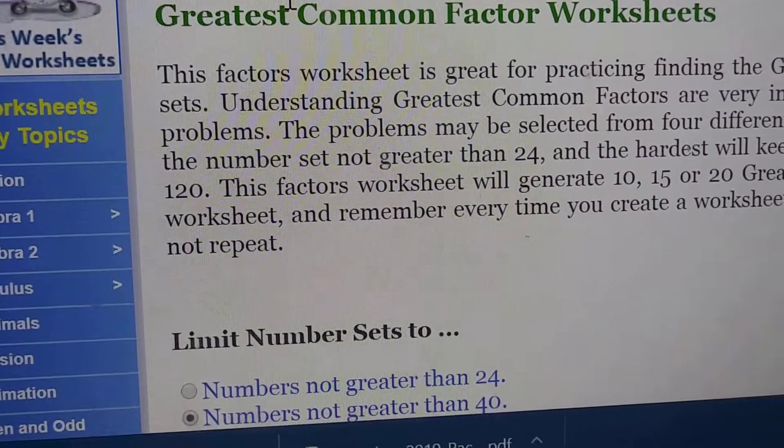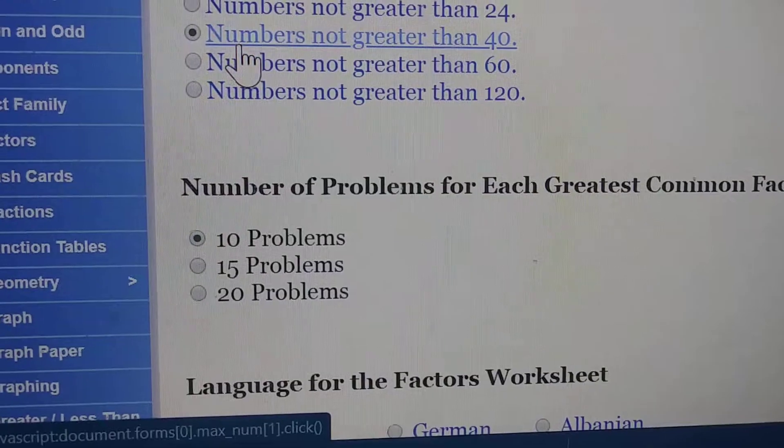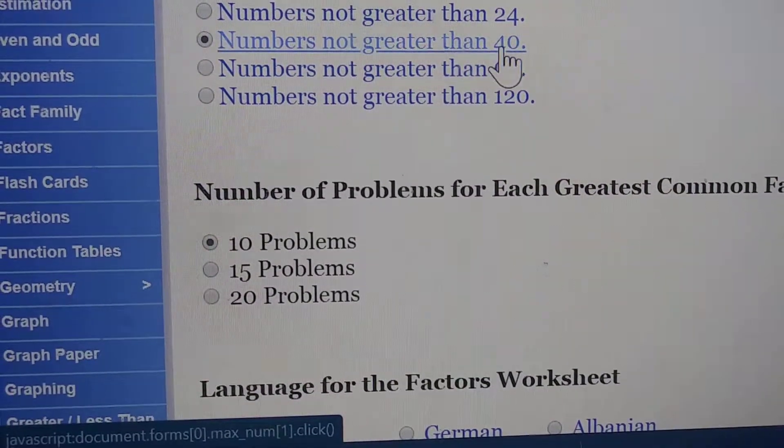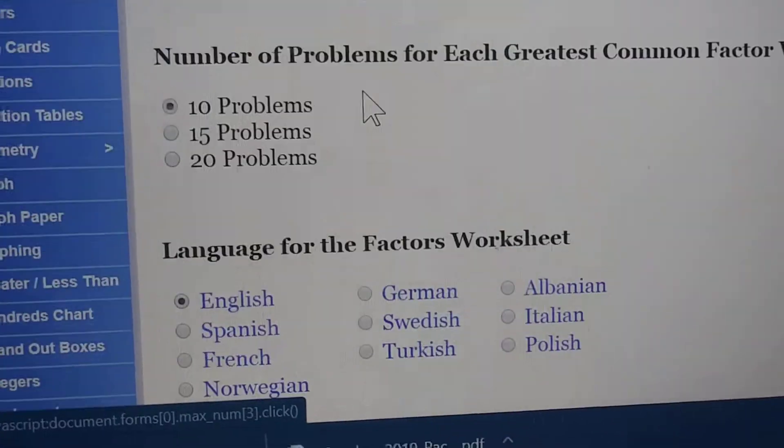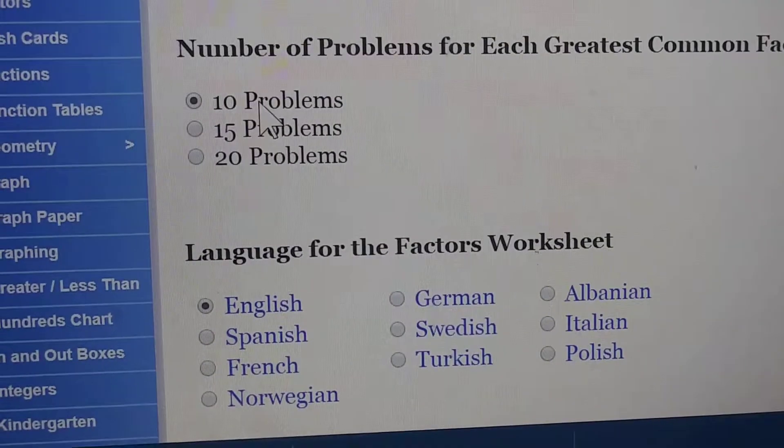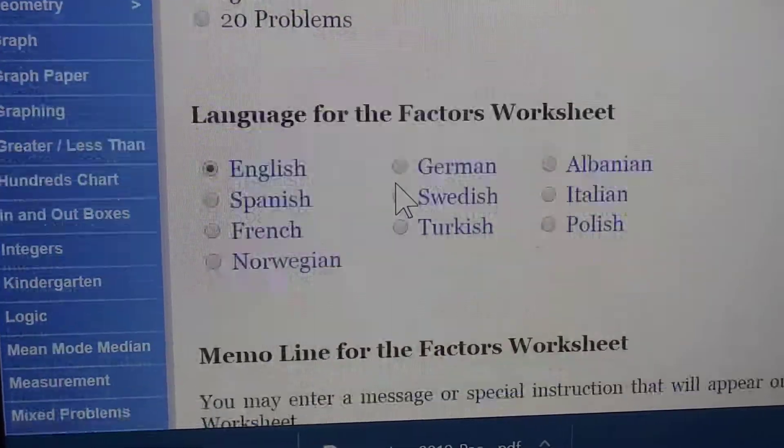So here I went ahead and put that I wanted greatest common factor. And then I go here and I put numbers not greater than 40. If you want to go higher, you can go to these right here or less. And then you put how many problems you want. If you want 10 problems, I wanted 15 problems. So I just go ahead and click it on there.